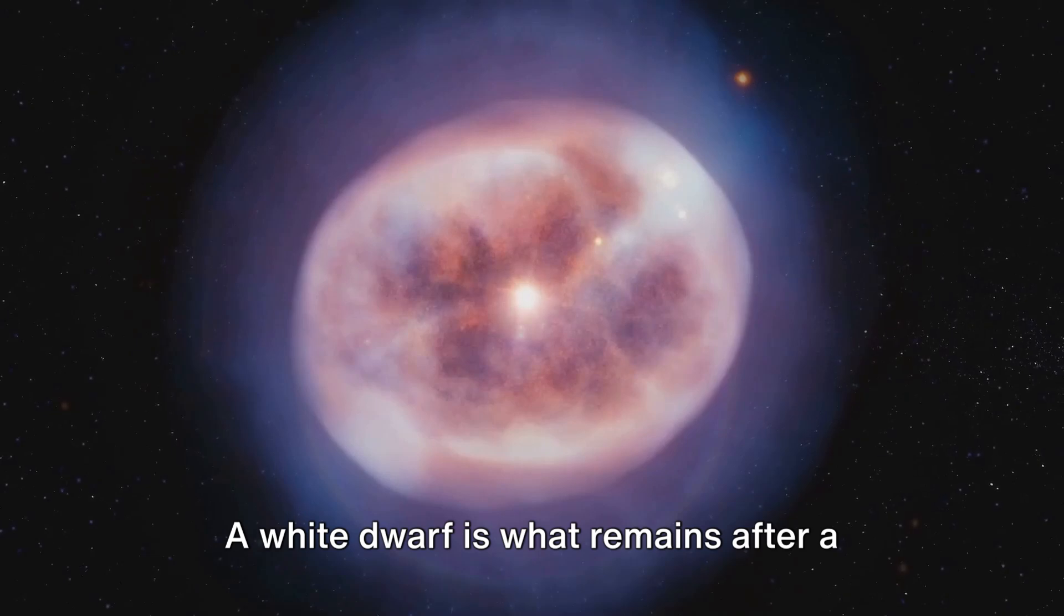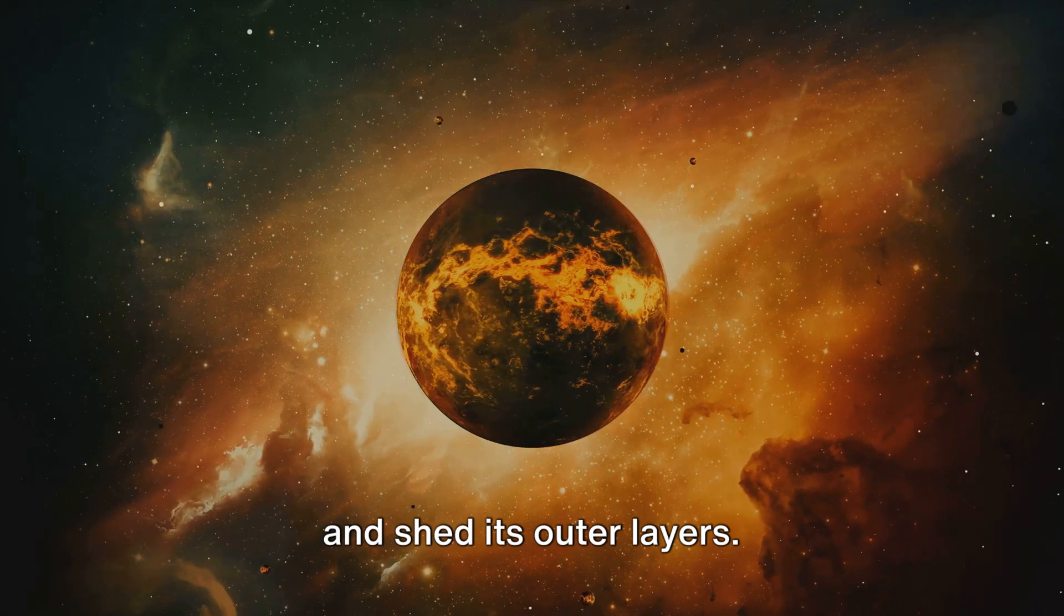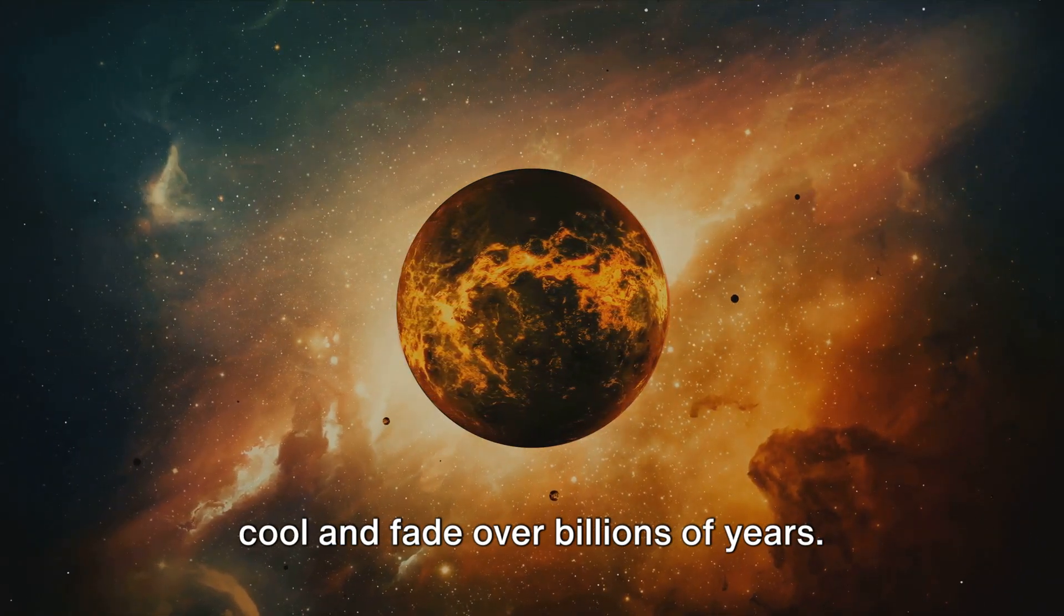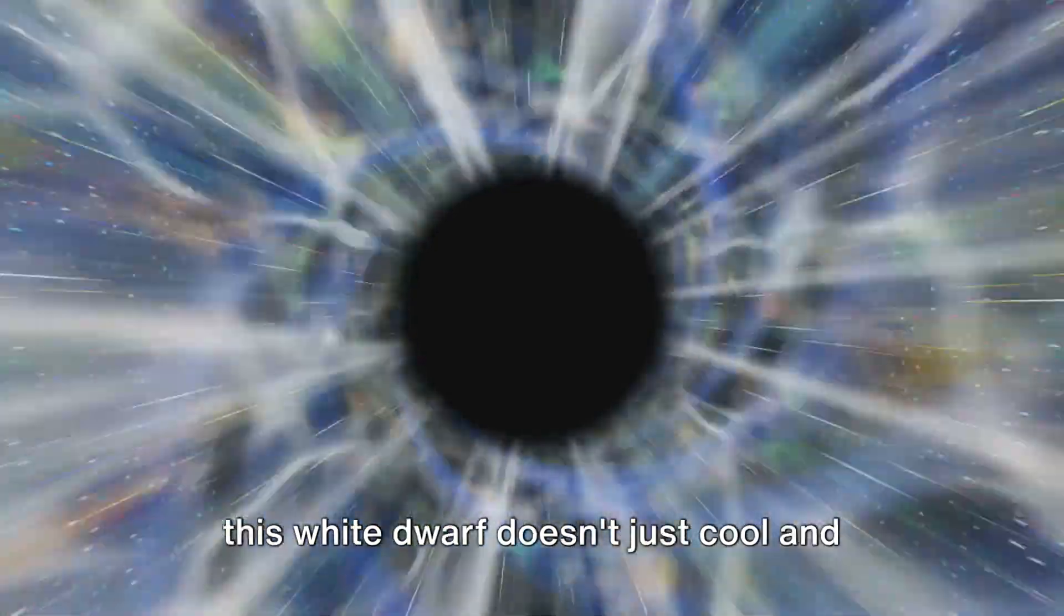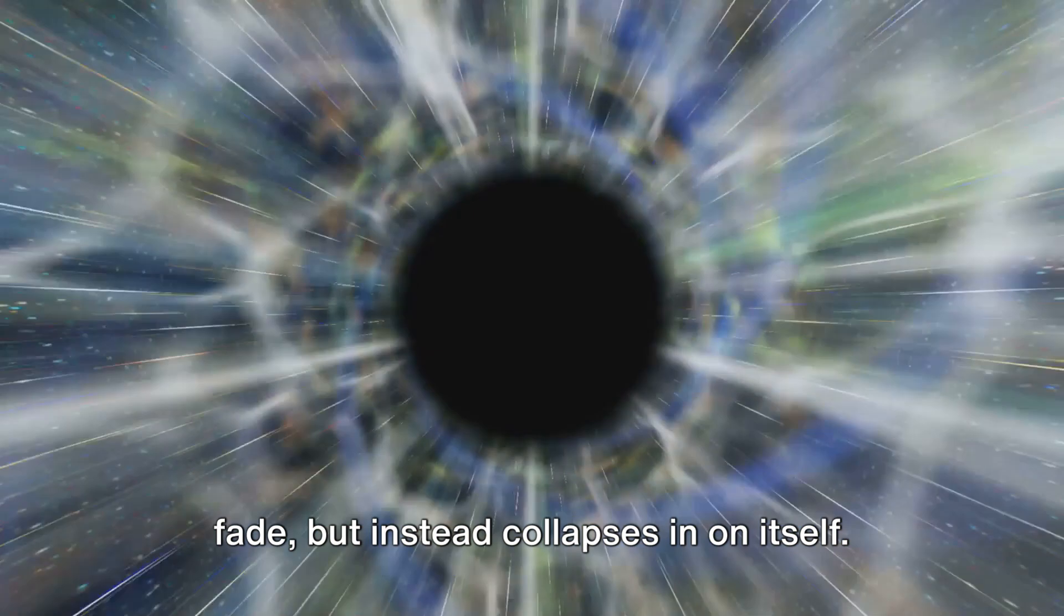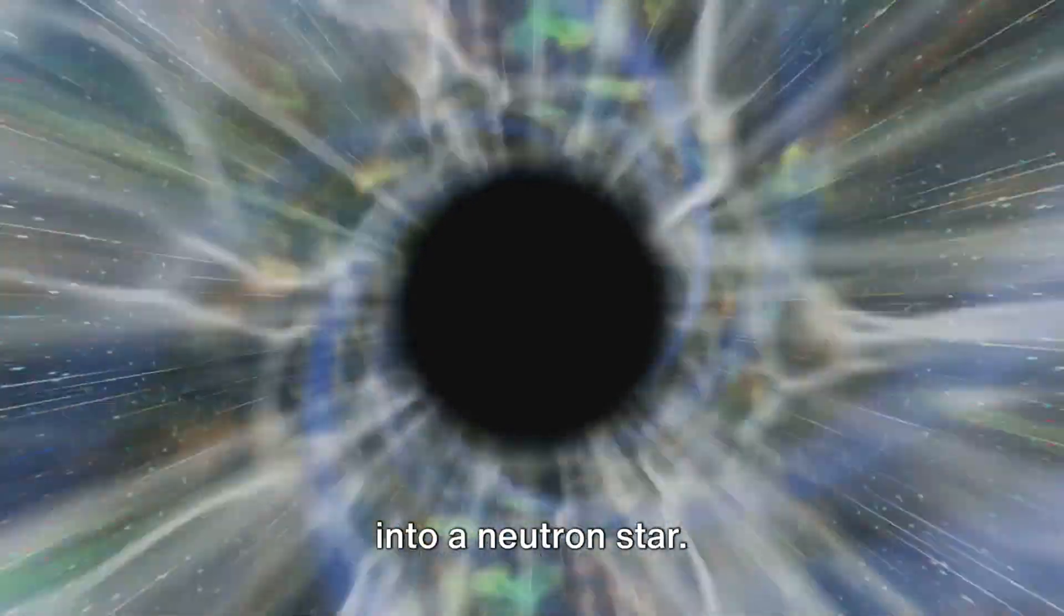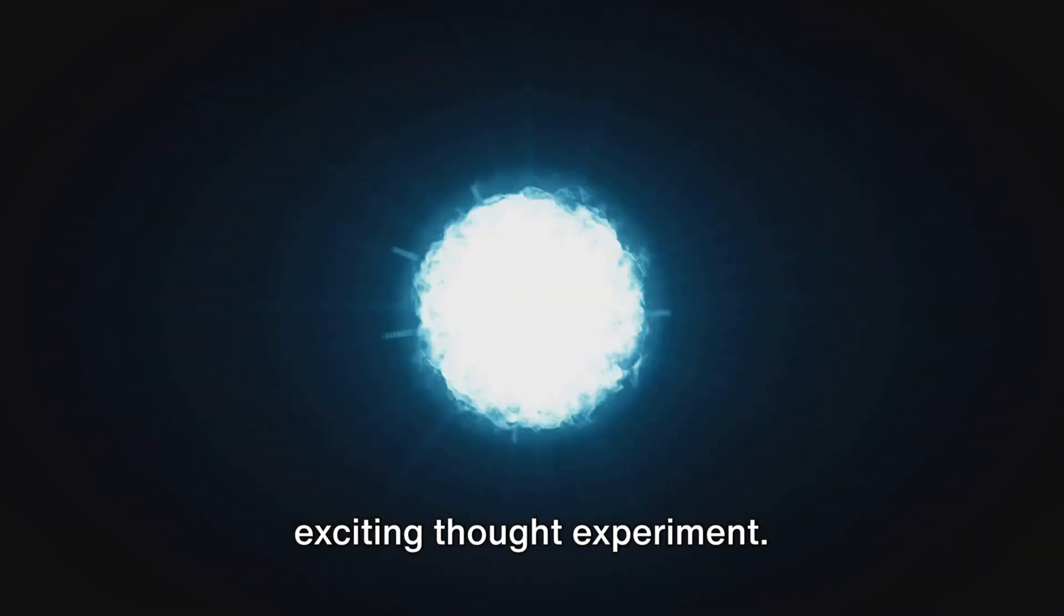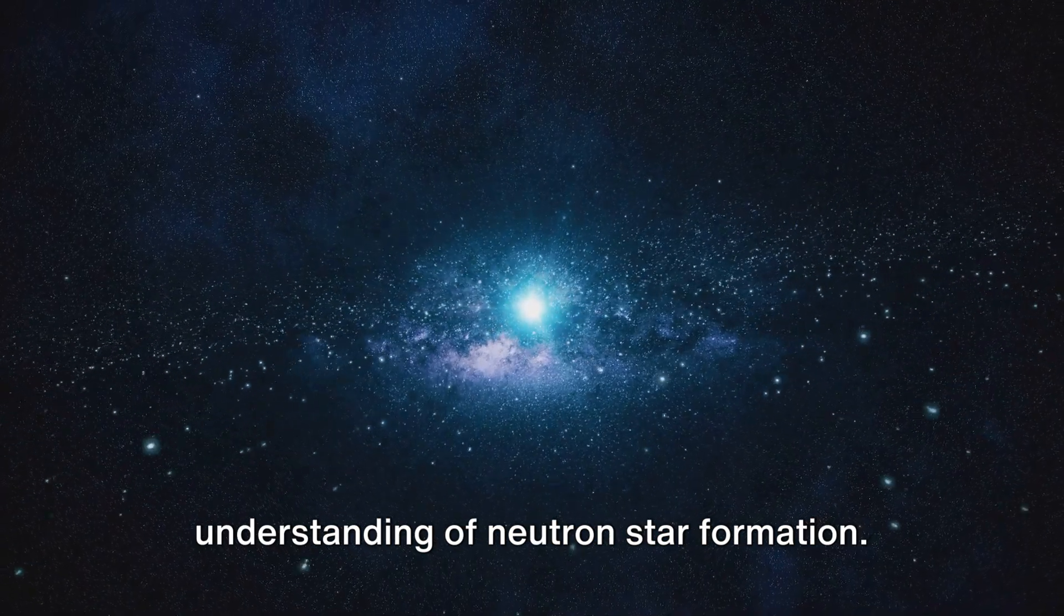A white dwarf is what remains after a star has exhausted all its nuclear fuel and shed its outer layers. It's essentially the star's core, left to cool and fade over billions of years. Now imagine if under certain conditions this white dwarf doesn't just cool and fade, but instead collapses in on itself. The intense gravitational forces at play could potentially compress the white dwarf into a neutron star.